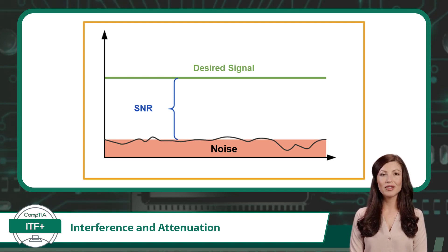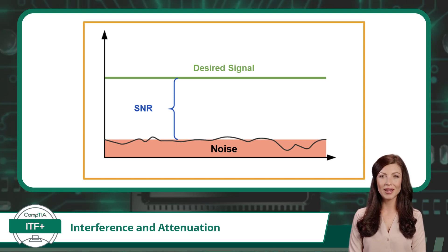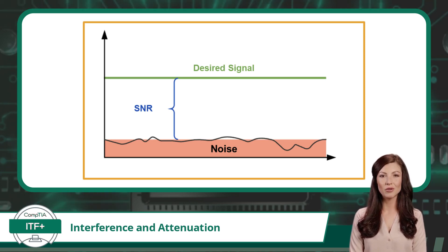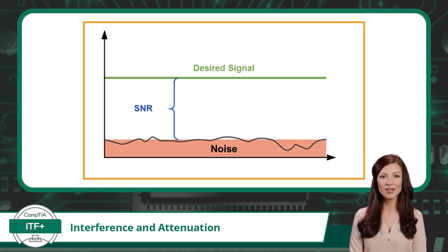In the context of technology, signal-to-noise ratio works similarly. It compares the strength of the desired signal, like a Wi-Fi signal, to the background noise such as electromagnetic interference. A high SNR means the desired signal is strong, resulting in clear and reliable communication, while a low SNR means the signal is weaker, leading to slow or unstable communications.